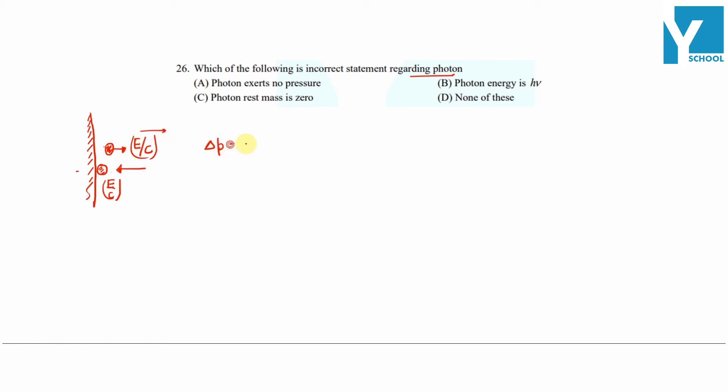So change in momentum is equal to 2E by C. Due to the change in momentum it experiences a force and also it exerts a force on the wall, and force per unit area is the pressure.